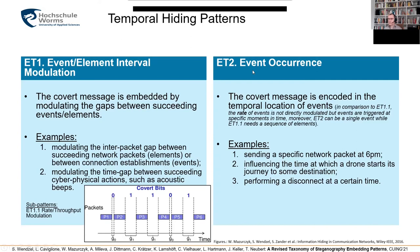For the second temporal pattern, the event occurrence pattern, we modulate the temporal behavior in a way that we encode hidden information in the temporal location of events. That means we do something at some specific time — for instance sending a specific network packet at 6pm, influencing the time when a drone starts, or performing a disconnect at some point in time.